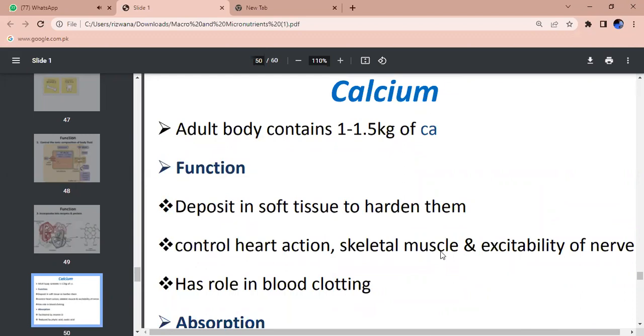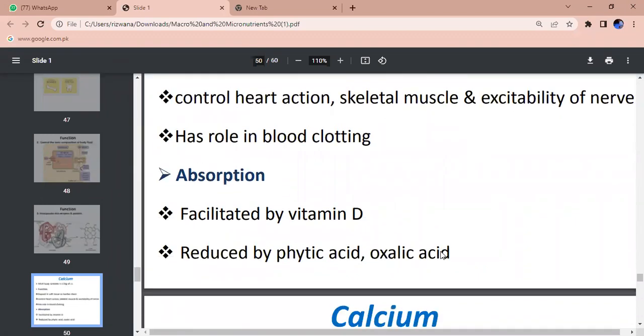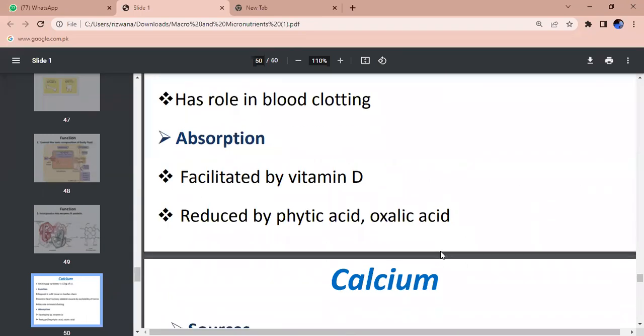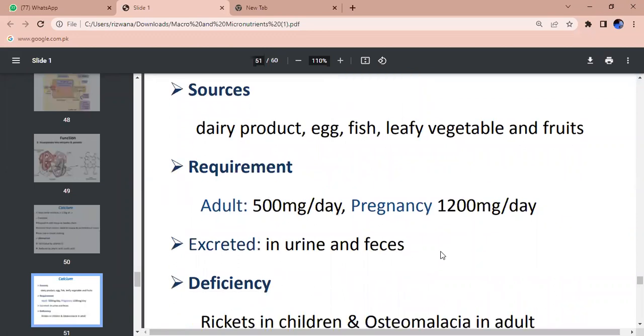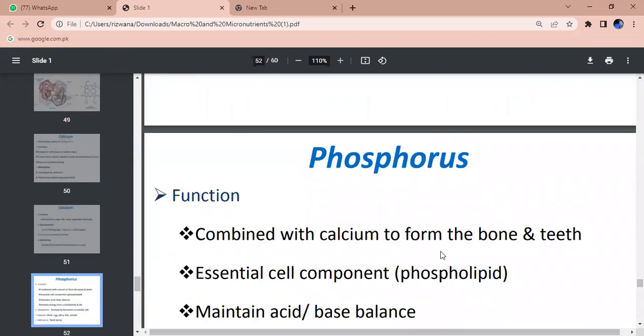Calcium - adult body contains one to one point five kilograms of calcium. Function - deposits in soft tissues to harden them. Controls heart action, skeletal muscle and nerves. Has role in blood clotting. Facilitated by vitamin D, reduced by phytic acid and oxalic acid. Sources - dairy products, green leafy vegetables, root vegetables. Requirement - 500 milligrams per day, pregnancy 1200 milligrams per day. Excreted in urine and feces. Deficiency causes rickets in children and osteomalacia in adults.